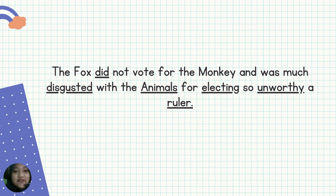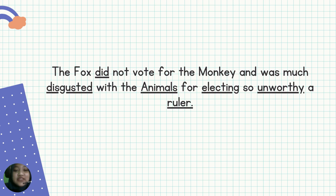Electing juga sama dia inflectional, jadi tidak mengubah makna asli. Terus unworthy dan ruler — ini adalah morpheme yang ditambah dengan derivational. Kalau misalkan sudah ditambah derivational, berarti arti katanya juga berubah. Itu analisis morphology-nya, kita pindah sekarang ke analisis sintaksis-nya.